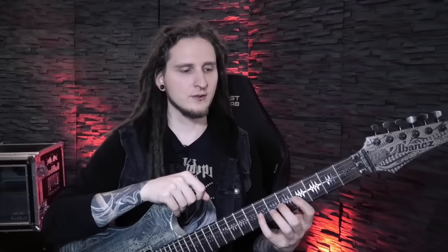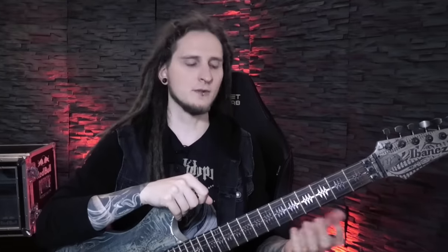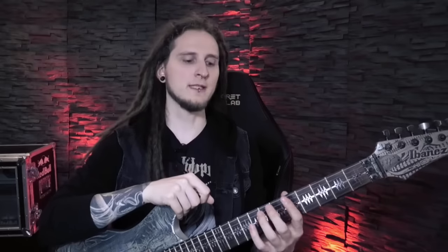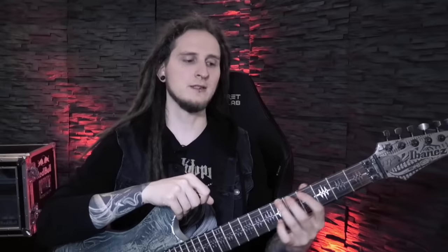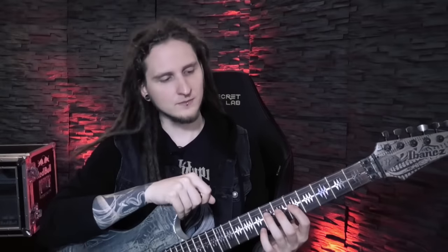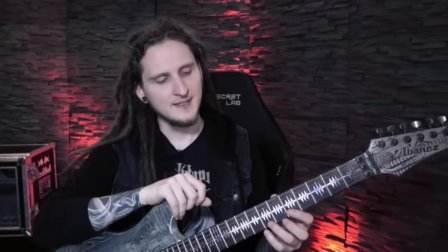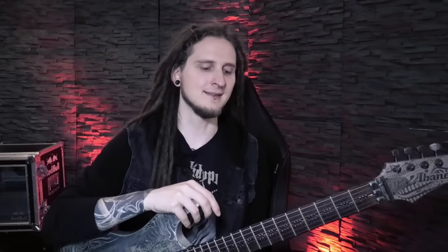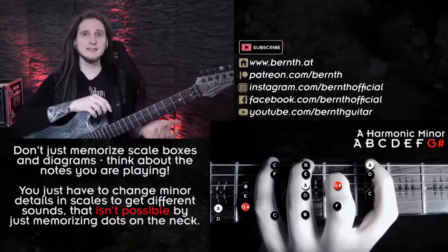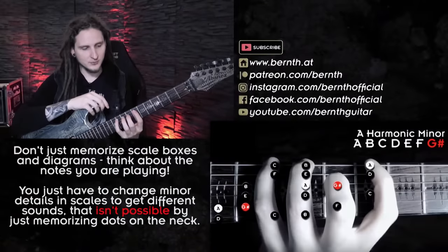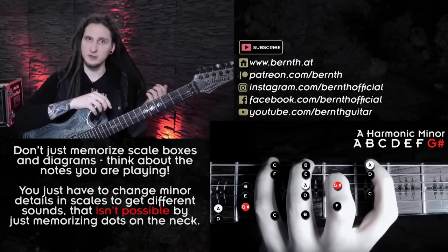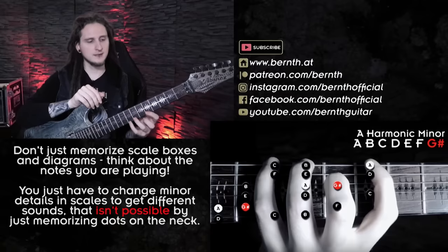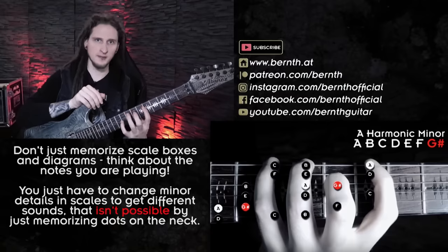Just like with chords, in the beginning I was just thinking in diagrams, boxes, and shapes — not really thinking about the notes I was playing. I was just memorizing the root note of each scale to move it around in different keys, just seeing the dots on the fretboard. The biggest problem with that is I was mechanically learning all those scales — the modes, for example: the B Locrian scale, the G Mixolydian scale, the E Phrygian scale and so on — but I had no idea how to actually use that sound or where the characteristic notes are located in the scale.